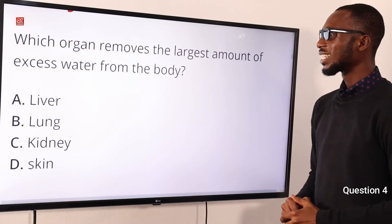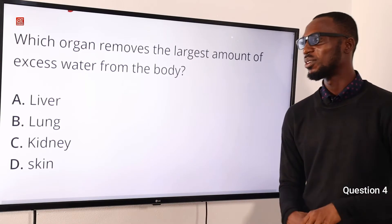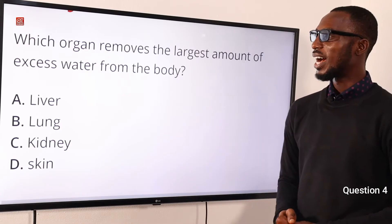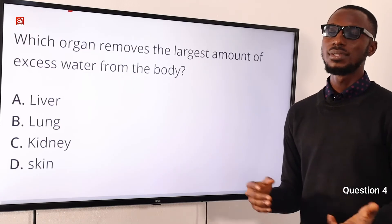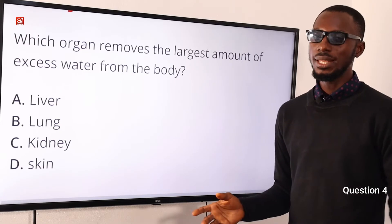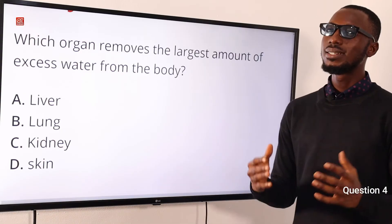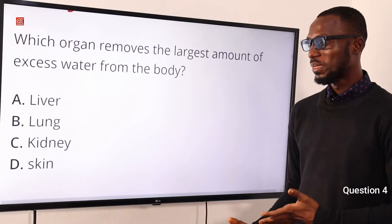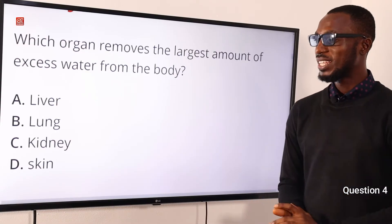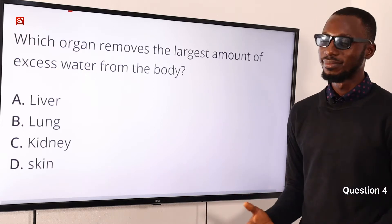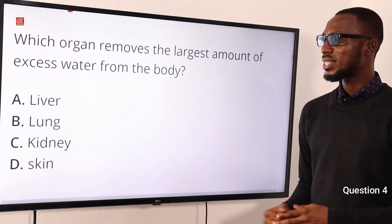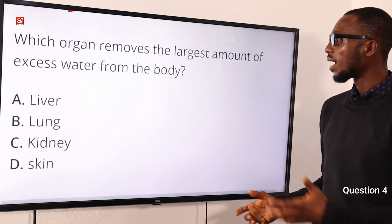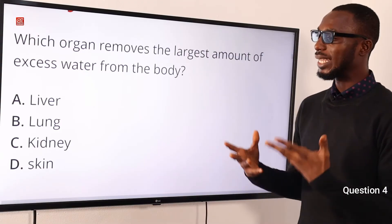Number 4: which organ removes the largest amount of excess water from the body? We are going to draw a logical conclusion. The body produces about 1.5 liters of urine on average daily, and 95% of this urine is made up of water. Urine is produced by the kidney. That gives us a strong indication that the organ responsible for removal of the largest amount of excess water should be the kidney.